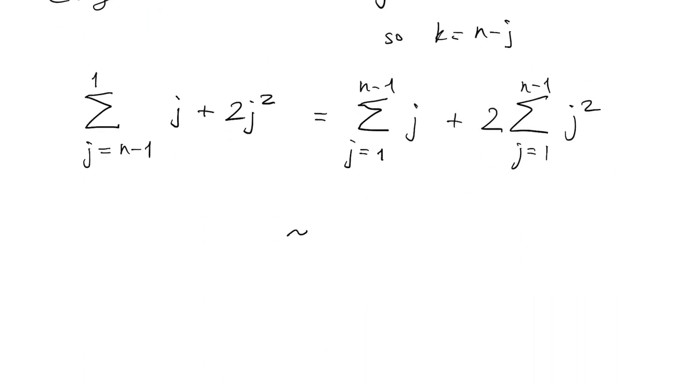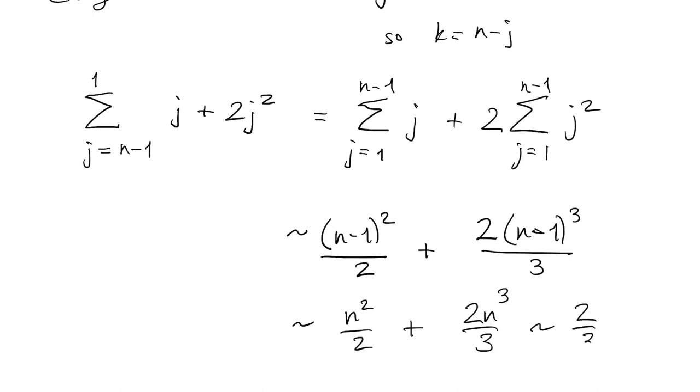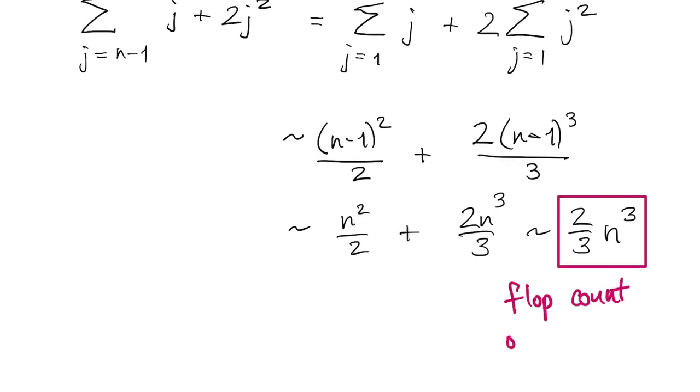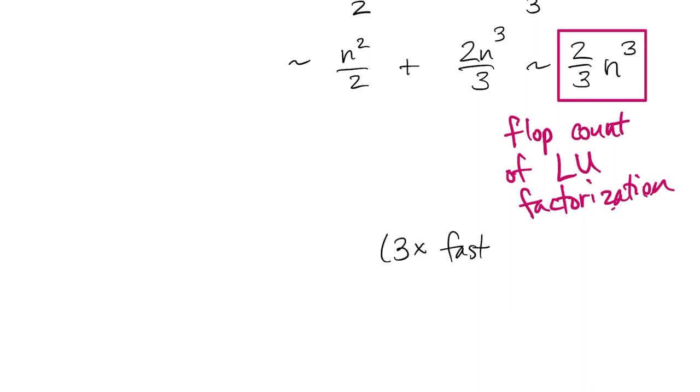So we now, everything up to this point has been exact, but we are now passing to an asymptotic approximation. And if you expand n minus 1 squared, well the leading term is n squared. Same thing with n minus 1 cubed. So the result is finally asymptotic to two-thirds n cubed. That's the flop count for LU factorization. It's kind of interesting compared to what we did before, that this is actually three times faster than matrix multiplication. So it's actually easier to factor than it is to multiply.